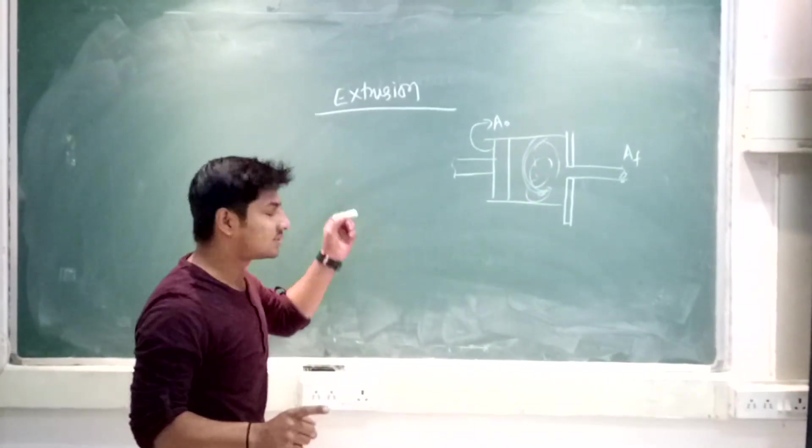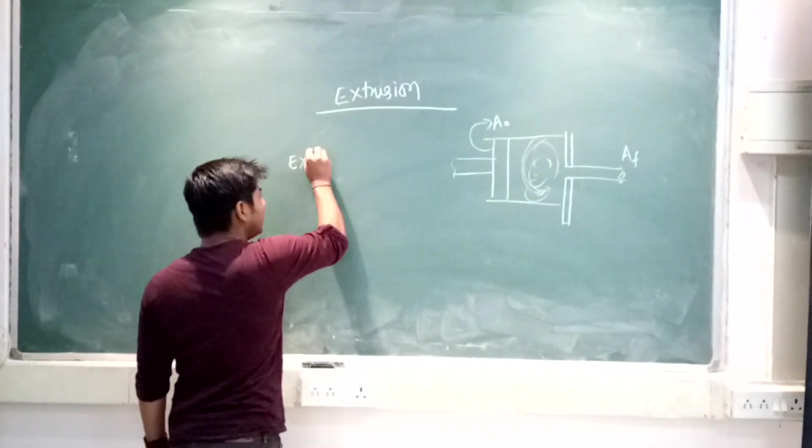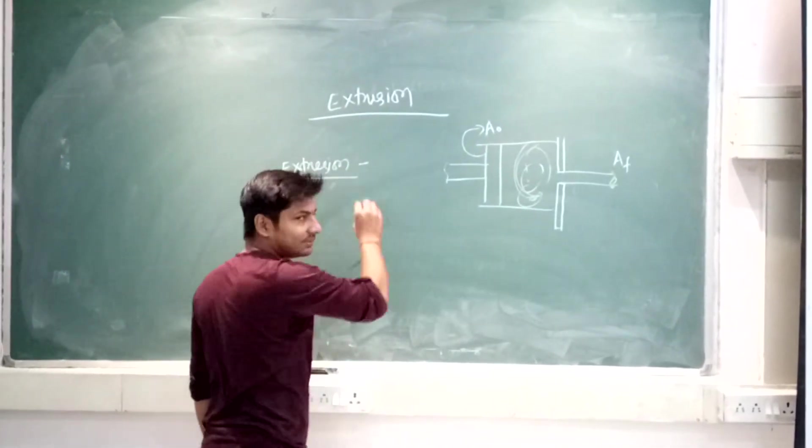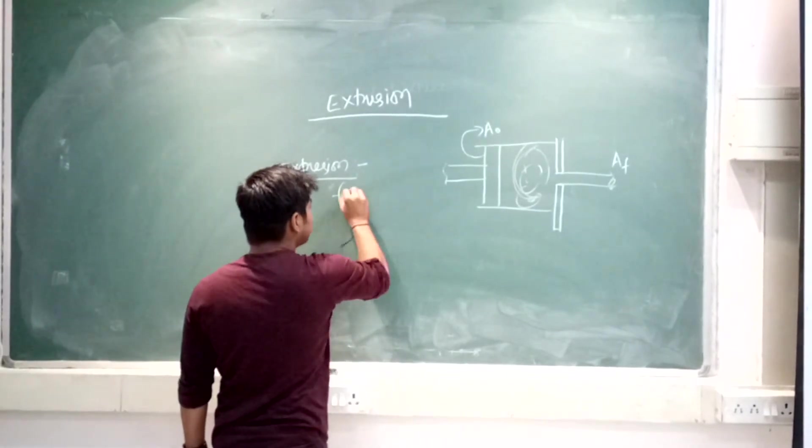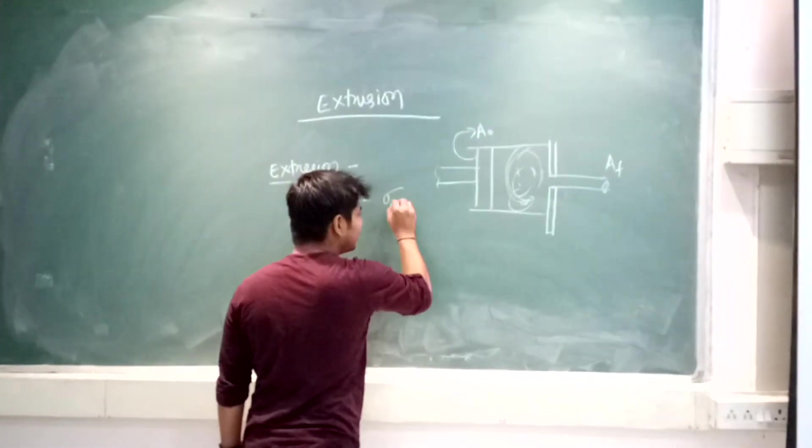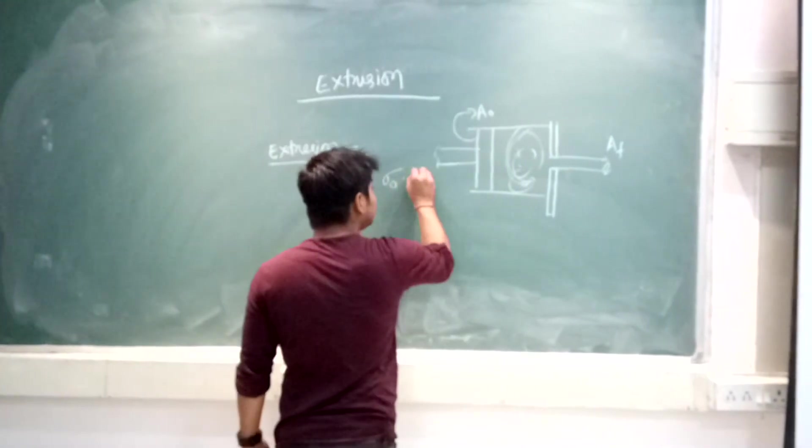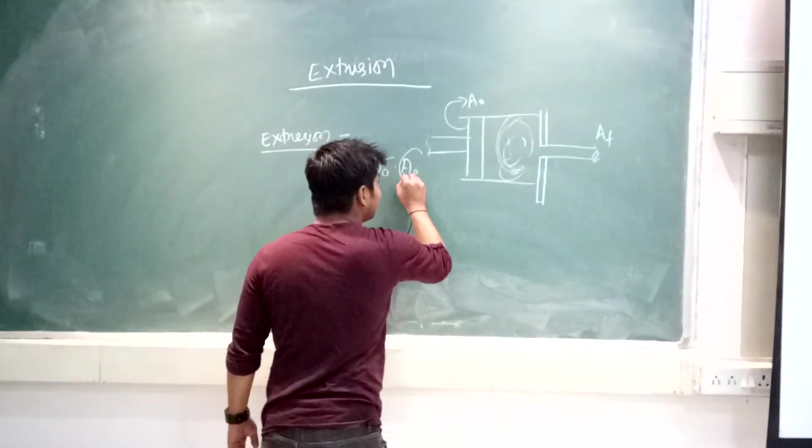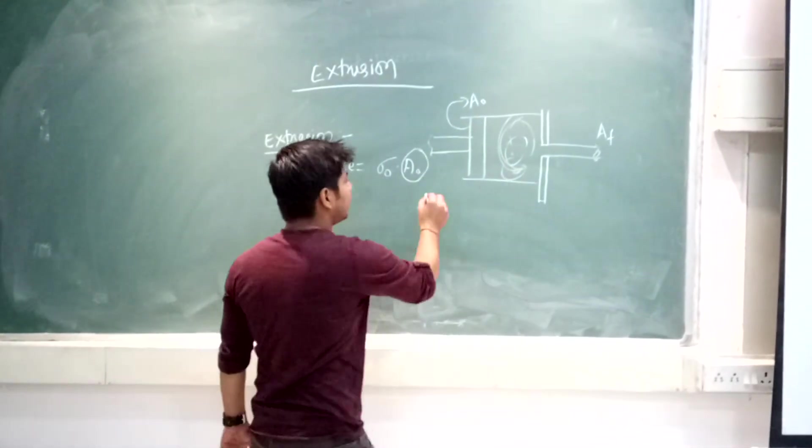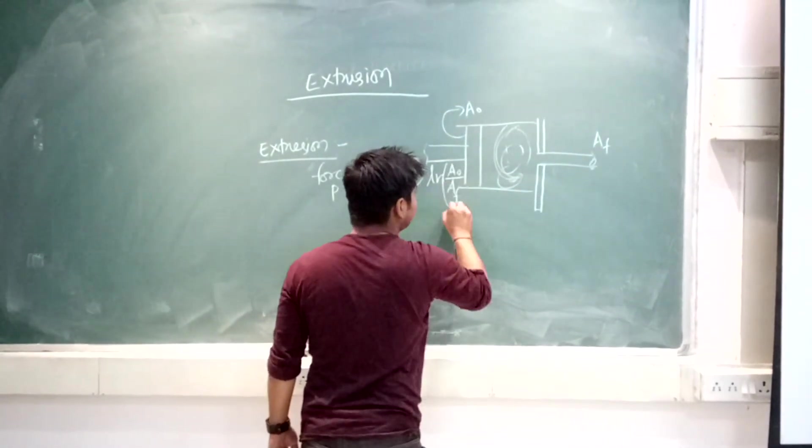At first, extrusion load. From here they can ask the numerical, this is the possibility. Extrusion force is denoted by P equals sigma zero times the initial area. In wire drawing this will be the final area, but here where you are applying the force, you have to take that area only - A₀ initial area. And this is log of the ratio of initial area to the final area.